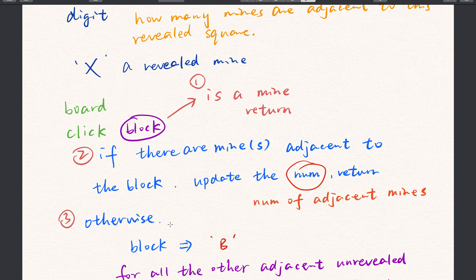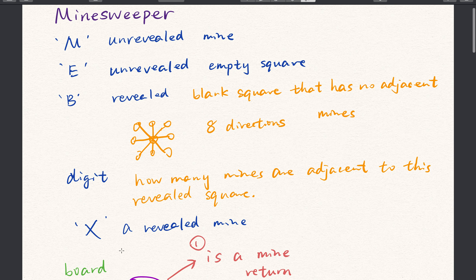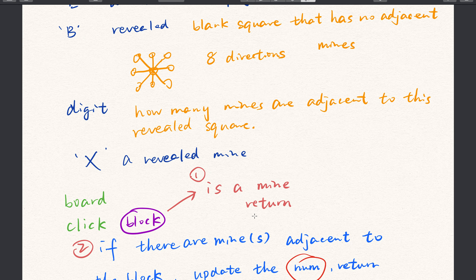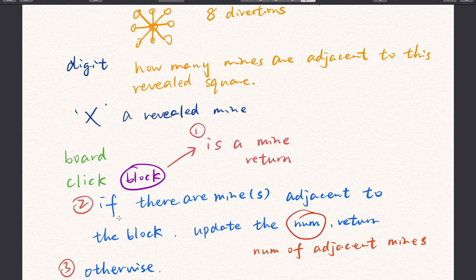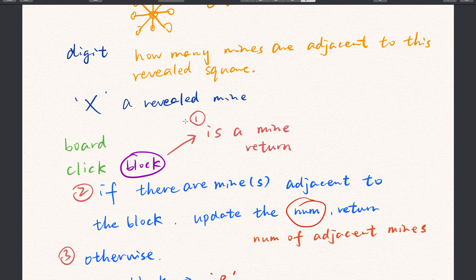This problem gives us a board and a click, which is the coordinate of the block we need to click. We need to think about different cases. The first case is if the block is a mine — it is M or X. If it's a mine, we just return, but do not forget to change this place to X if it's unrevealed. If there are mines adjacent to this block, meaning there is some mine in at least one of eight directions, we need to update the number indicating the count of adjacent mines.